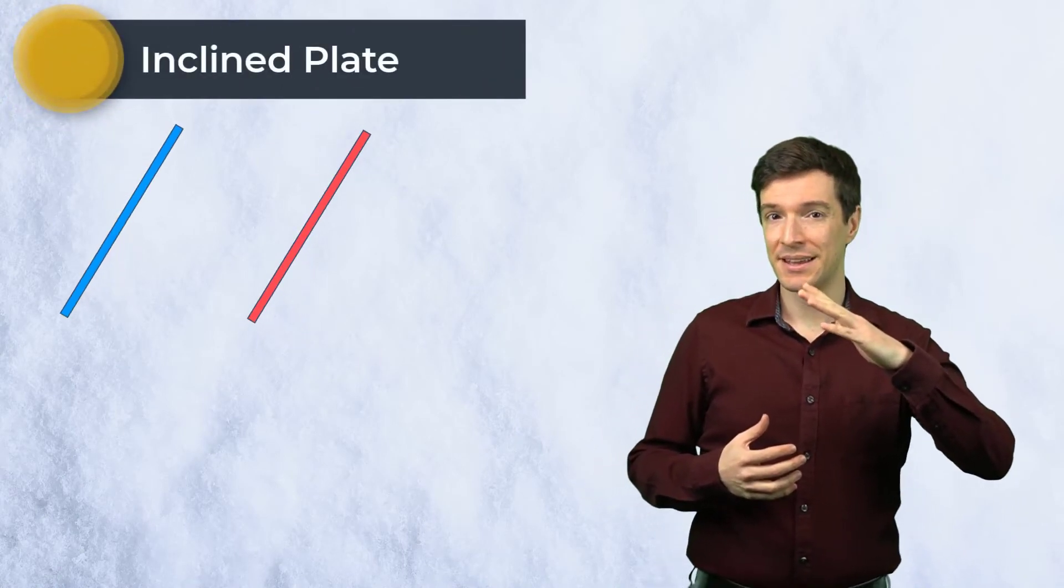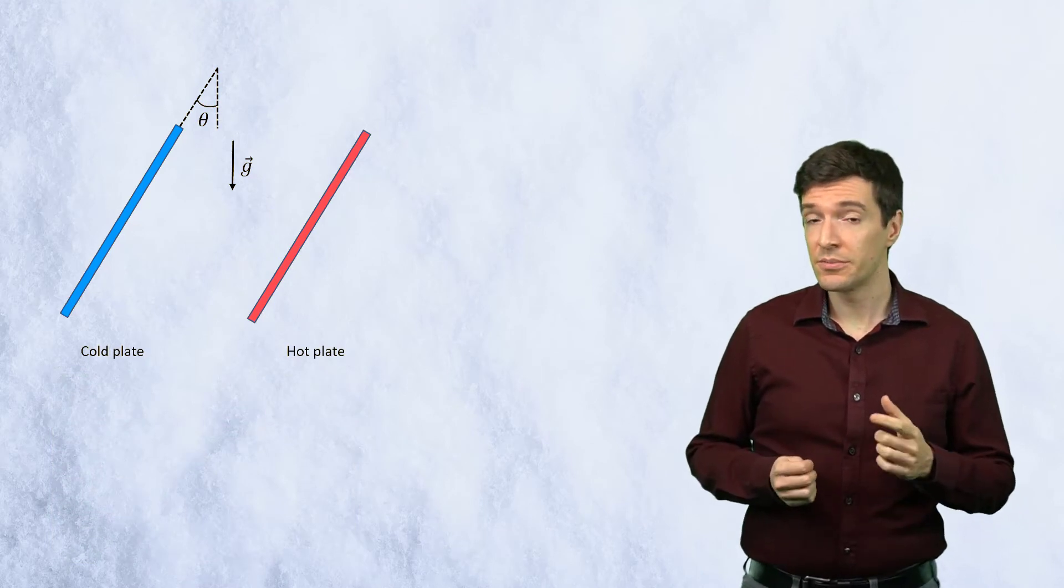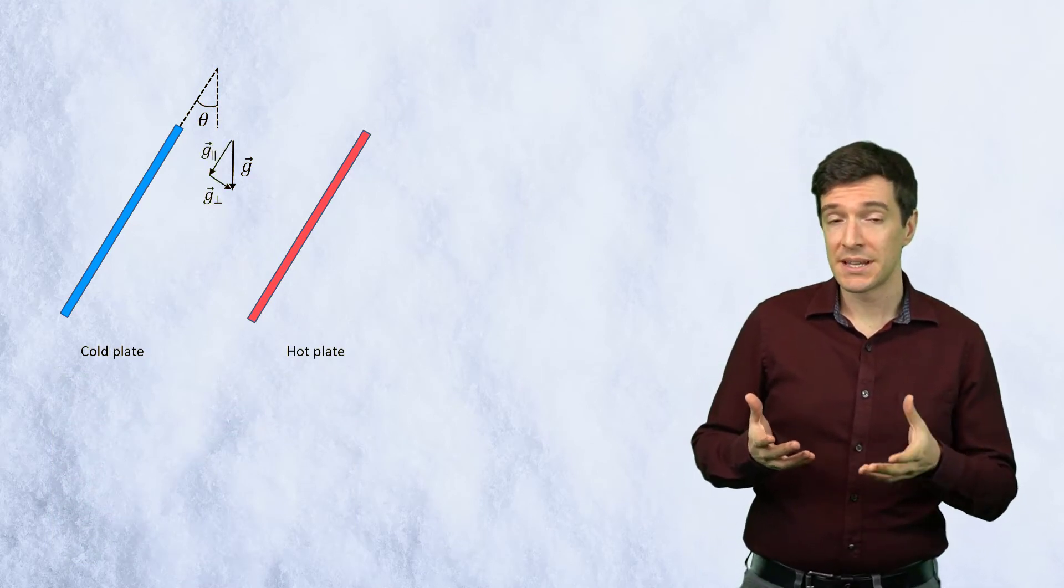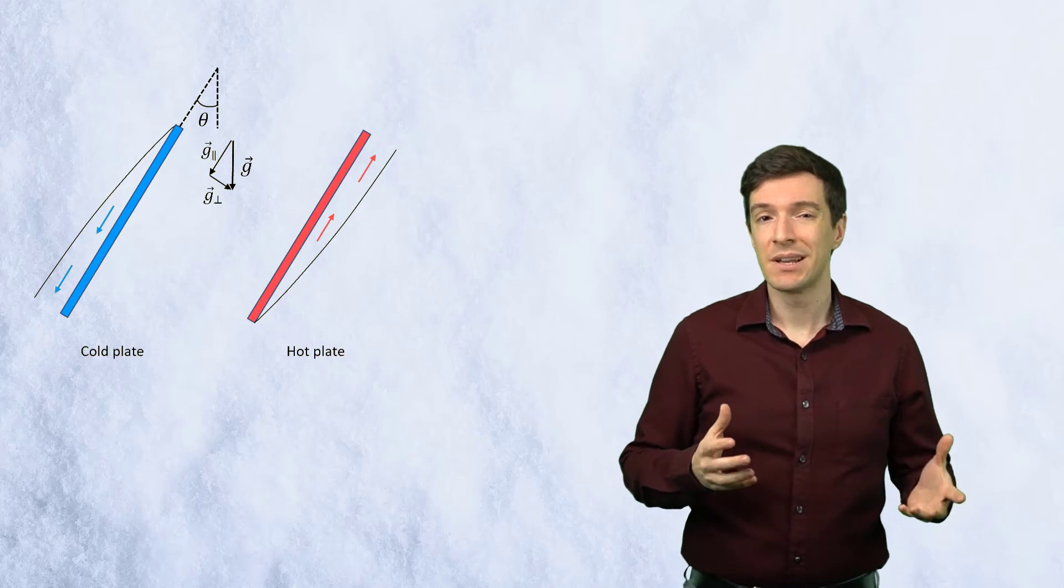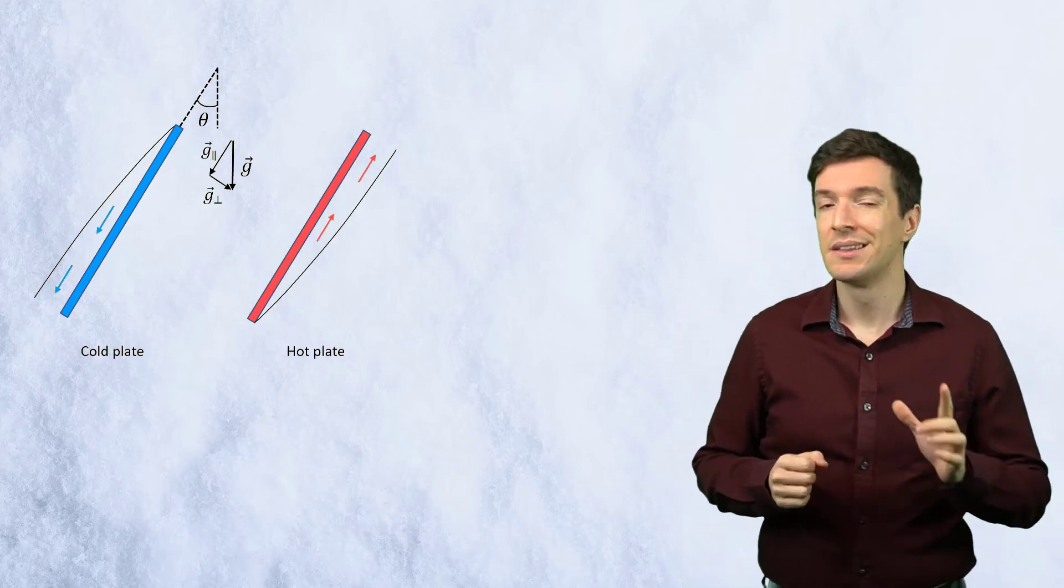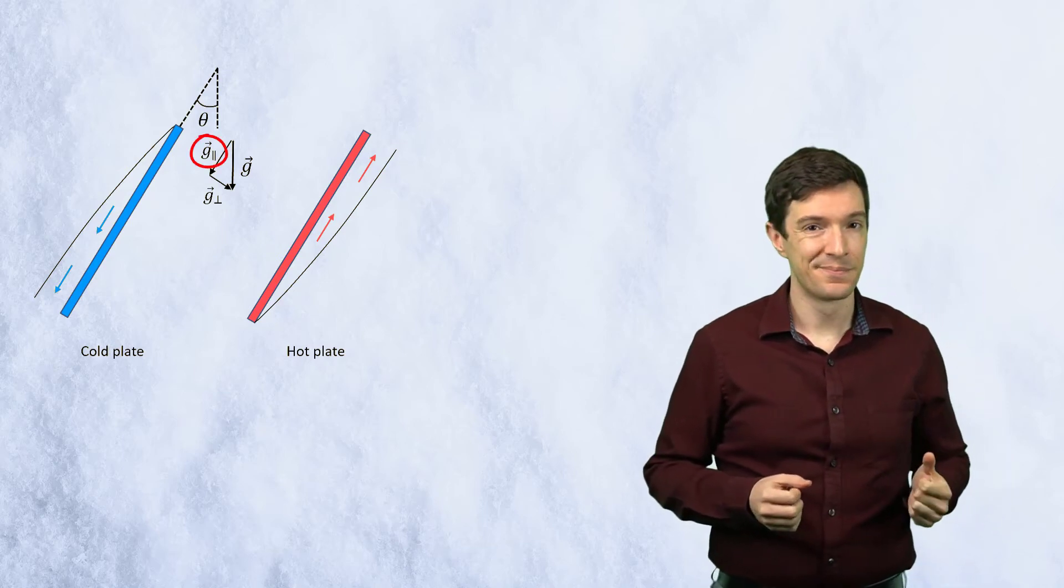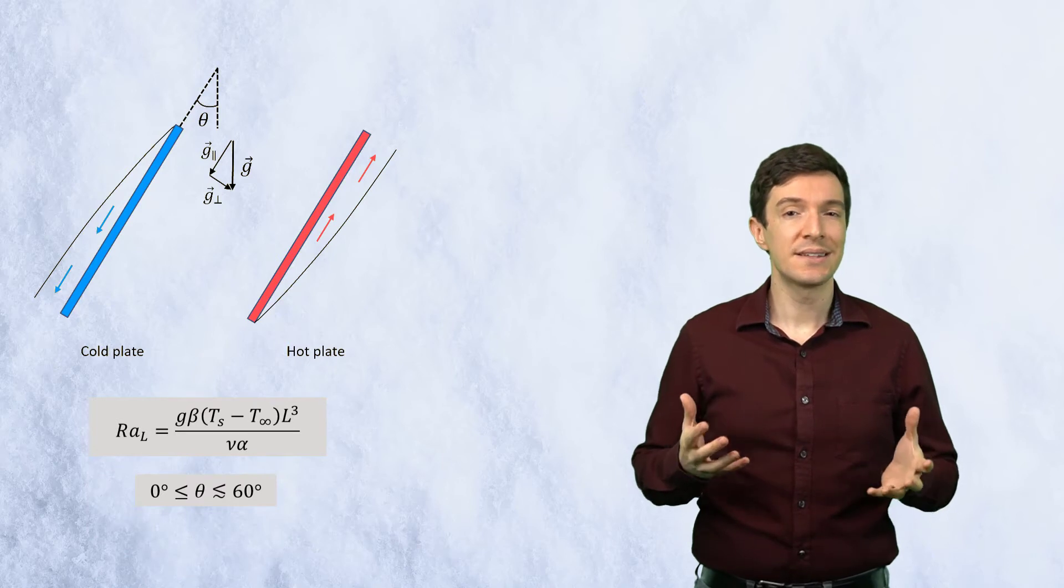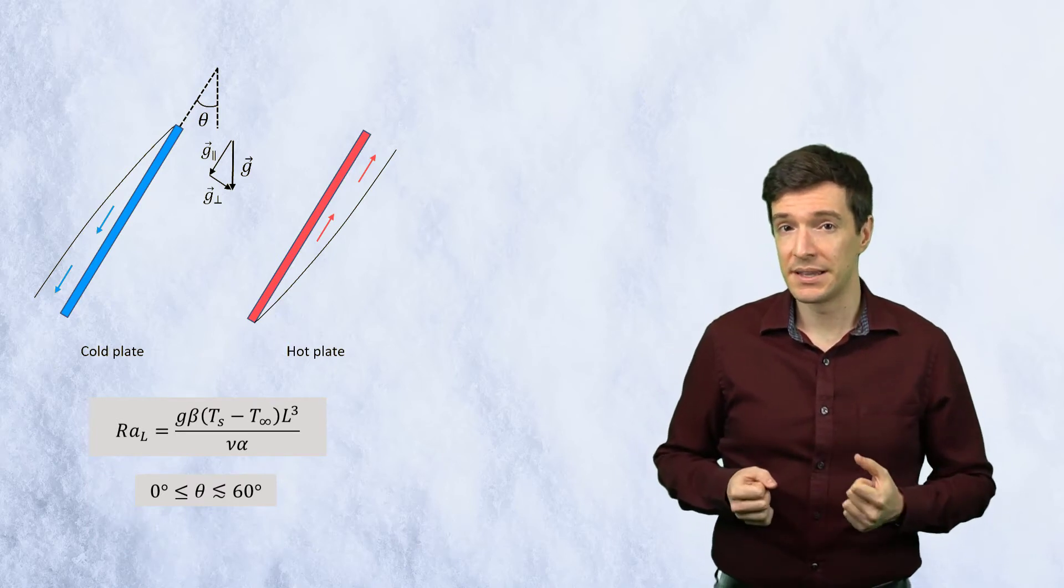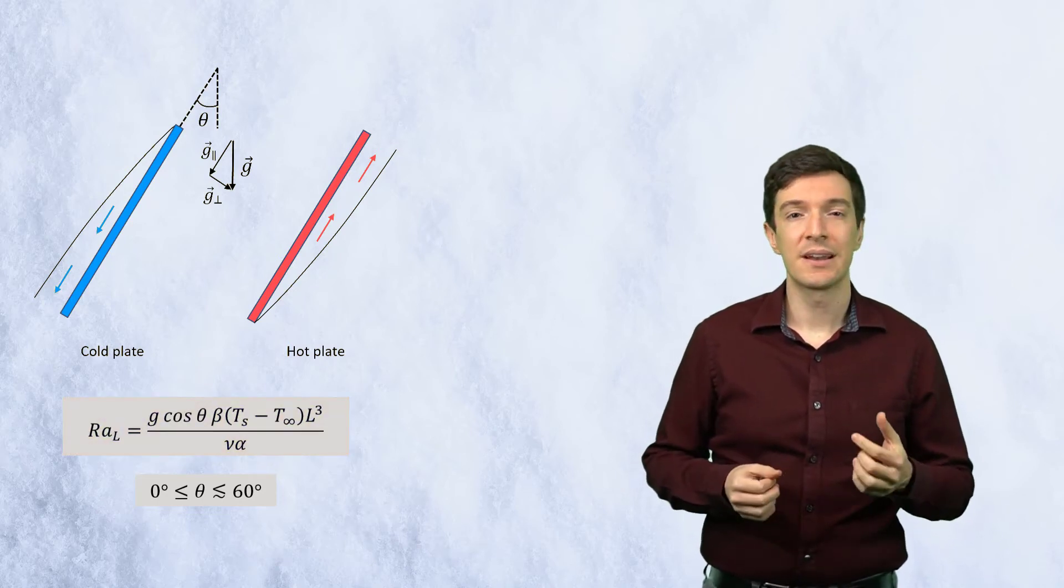If we rotate the plate by an angle theta, we obtain an inclined plate, like a tablet on a stand. The gravitational vector now has a component normal to the plate. For the top side of a cold plate or the bottom side of a hot one, the behavior is similar to the vertical plate, but the heat transfer is reduced due to the smaller gravitational component parallel to the plate. For theta between 0 and 60 degrees, we can estimate the heat transfer on these sides of the plates, substituting G with G cosine theta when calculating the Rayleigh number.